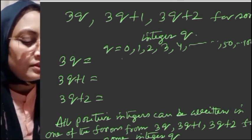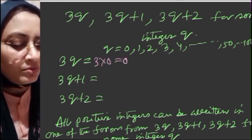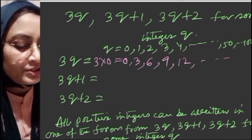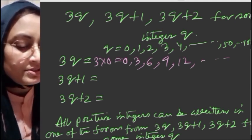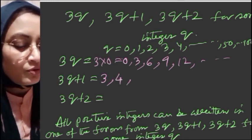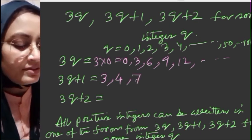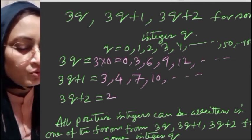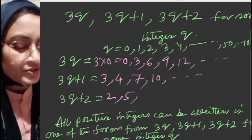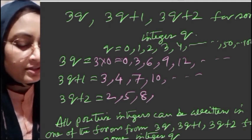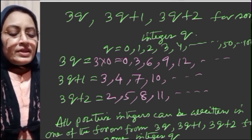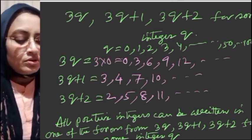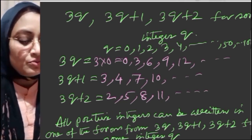If q equals 0, then 3q equals 0; 3 into 1 equals 3; 3 into 2 equals 6; and so on. For 3q+1: when q equals 0, we get 1; when q equals 1, we get 4; when q equals 2, we get 7; when q equals 3, we get 10. For 3q+2: 3 into 0 plus 2 equals 2; 3 into 1 plus 2 equals 5; 3 into 2 plus 2 equals 8; 3 into 3 plus 2 equals 11.